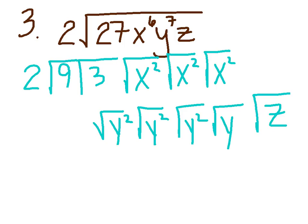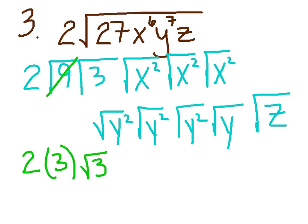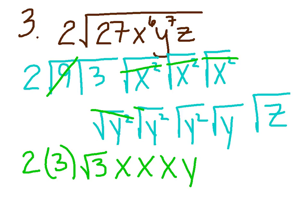Once they're all broken down, I'm just going to go through and cross off the ones I know. I'm going to leave my 2 in front. The square root of 9 becomes a 3. I don't know the square root of 3, so I'll leave that alone. The x squared and square root cancel to make an x — cancel again to make another x — cancel again to make another x. The y squared and square root cancel, so I get a y, another y, another y, and then I can't break the last two down.